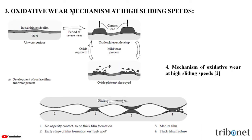Oxidative wear depends also on the sliding speeds. At high speed, the thin oxide films present on the unworn steel surfaces are rapidly destroyed and the friction and wear rates increase, initiating a period of severe wear. Then, by some poorly understood process, the worn surface recovers and a state of mild wear is reached.